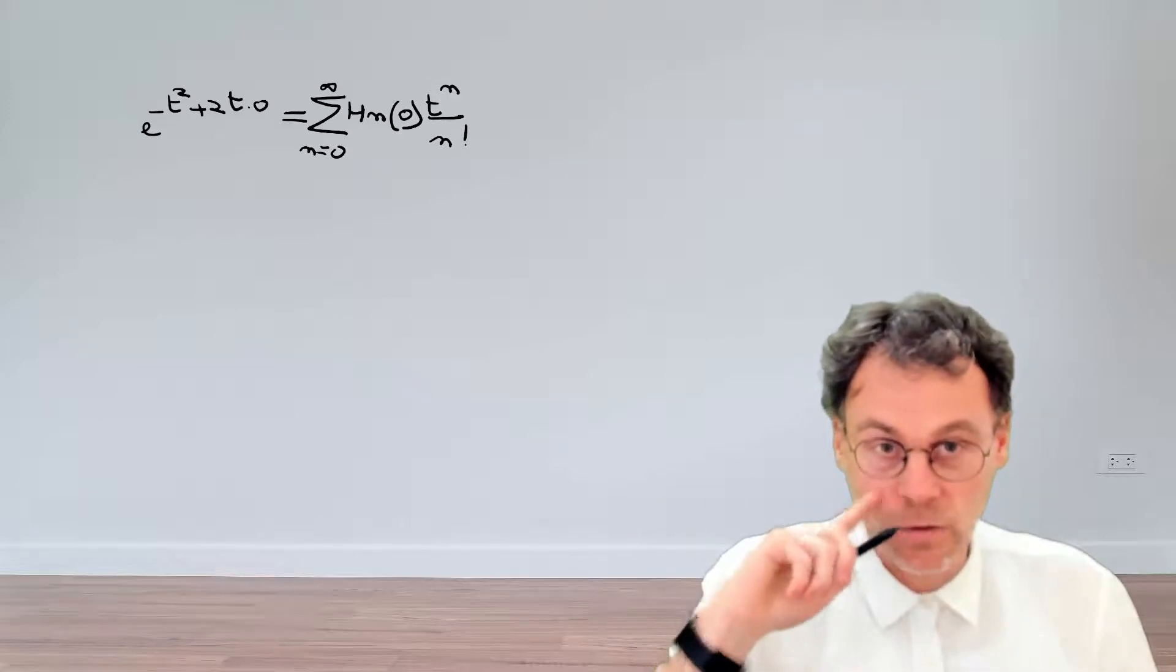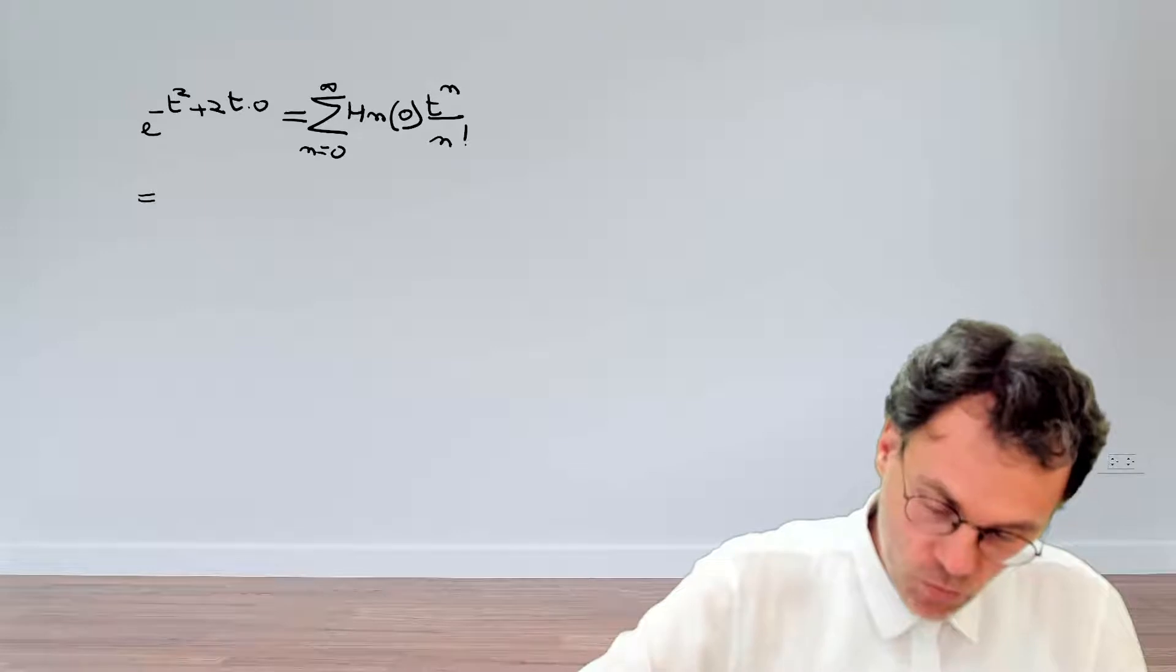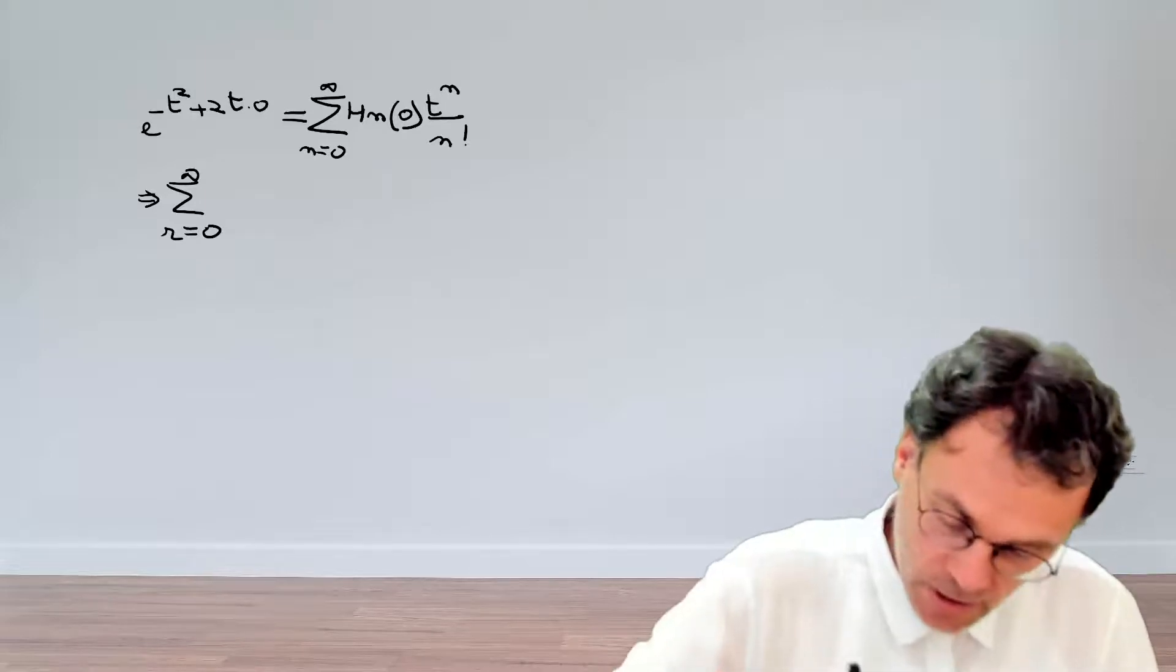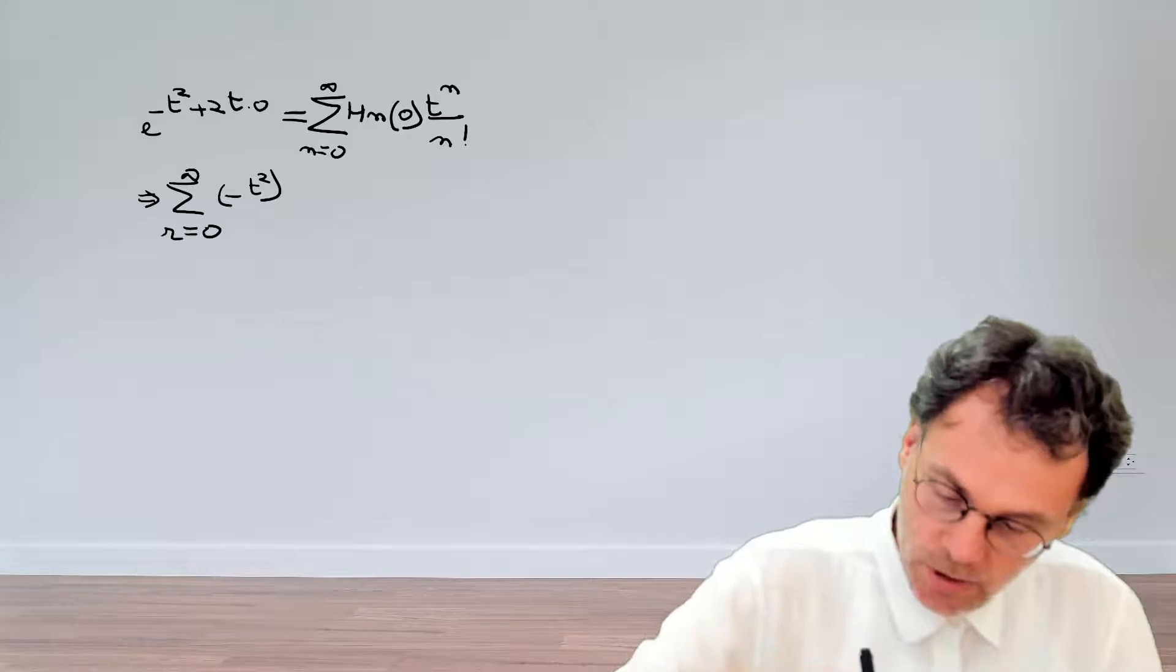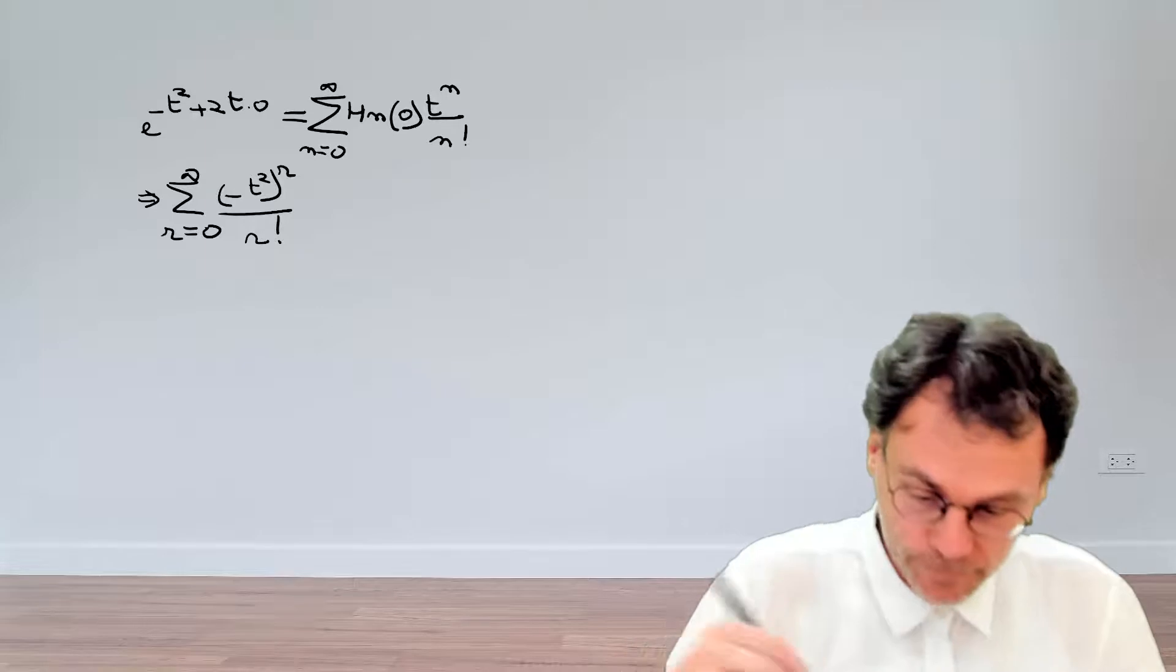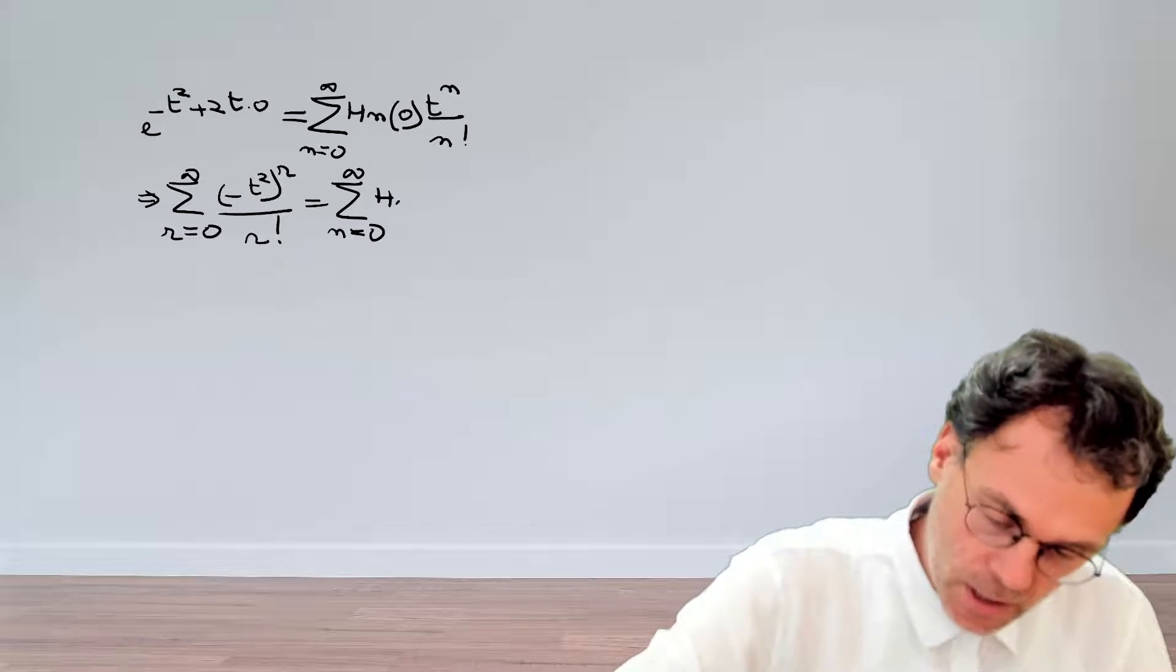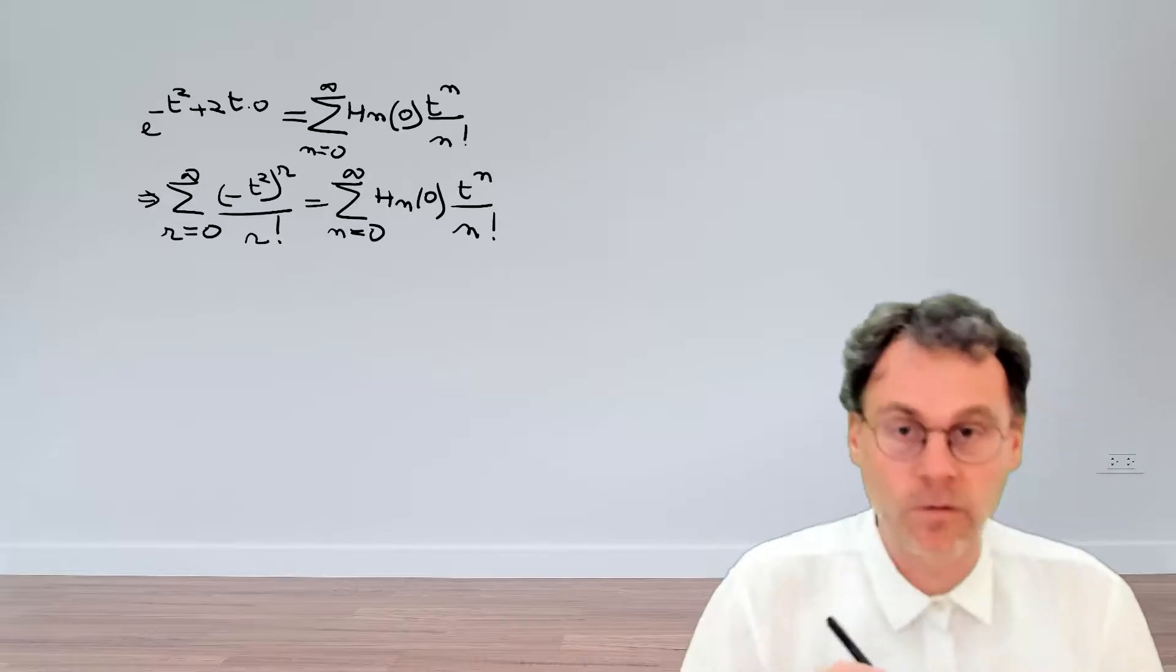For the left-hand side, we have exponential minus t squared that we should write as a series expansion. So let's have a summation of r going from 0 to infinity. The argument of our exponential, that's minus t squared to the power of r, divided by r factorial. And then copying the right-hand side, n 0 infinity, Hn(0), t to the power of n, n factorial.